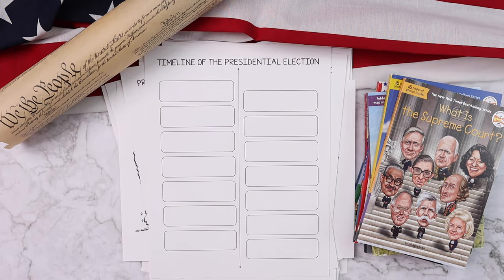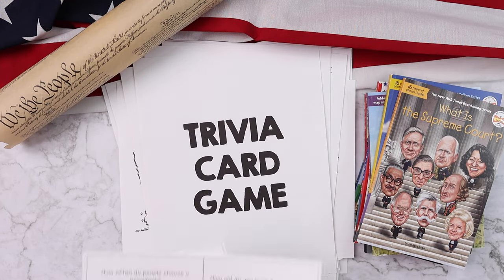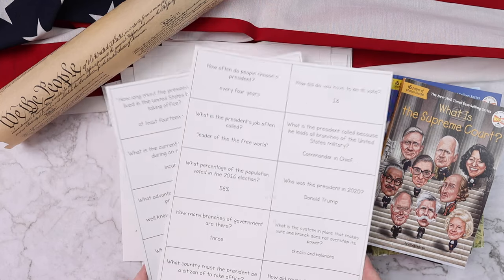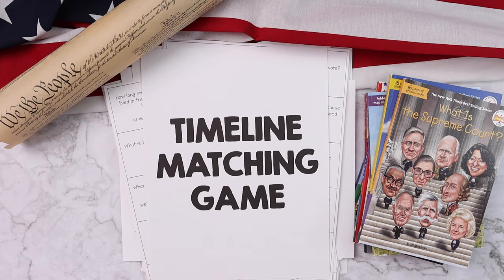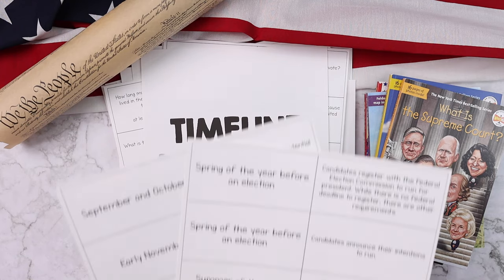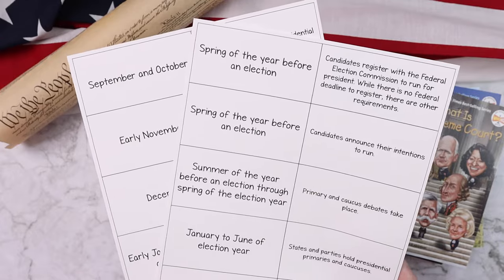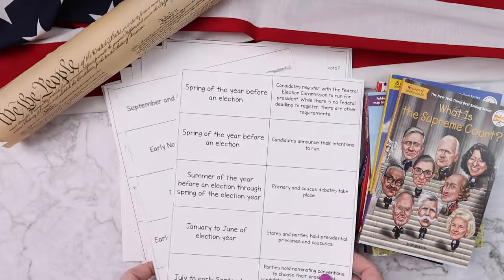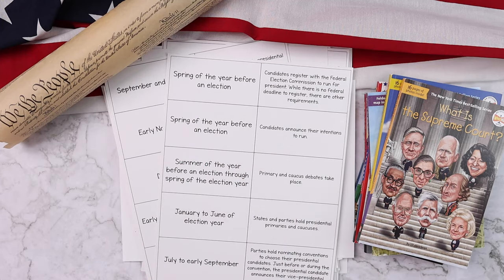We also always include a few games in each of our mini units. They include a trivia card game where there are 20 questions for you to cut out and quiz your child. And then we include a timeline matching game where we match the date or time frame to what happens. This one is a little more specific — for example, in spring of the year before the election, the candidates register with the federal election commission to run for president.